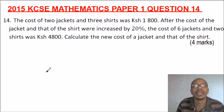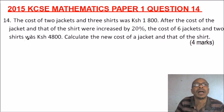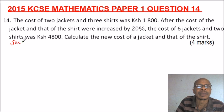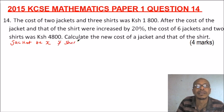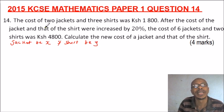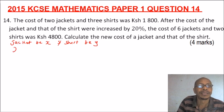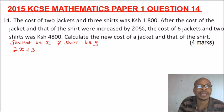This question will lead us to forming simultaneous equations. Let jacket be x and shirt be y. We can write an equation connecting jacket and shirt: two jackets plus three shirts gives us 2x + 3y = 1,800.